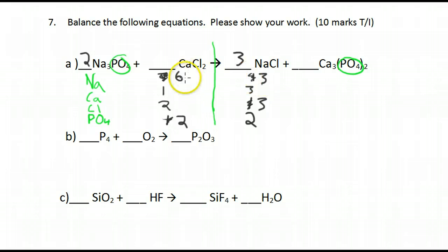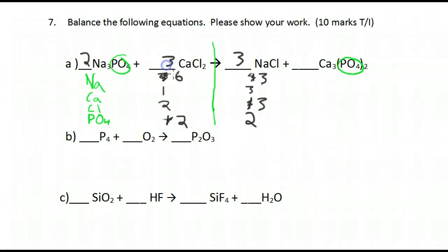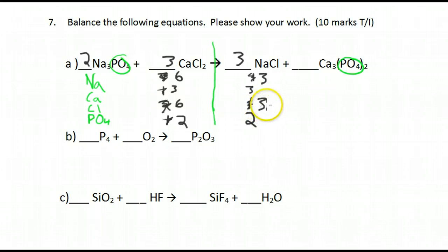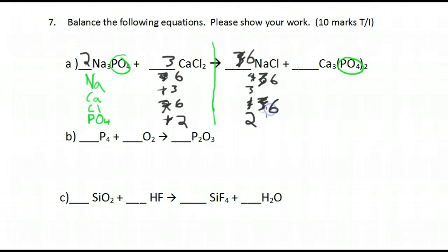So it's fixed but now it's broken again — that's okay. Let's look at the calcium: we have three on this side and only one on this side, so let's change that. Now we have three calcium, but that also changed the chlorine to six. What's still off is the chlorine and the sodium, so we can fix that by adding a six here, which updates it to six and six.